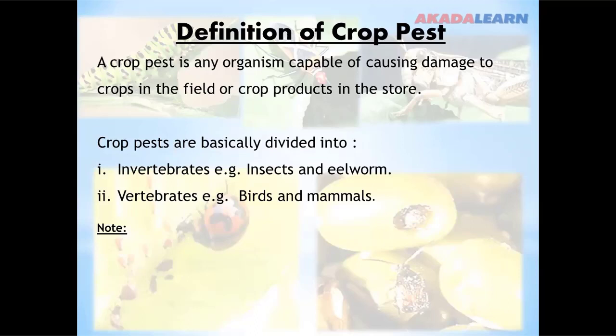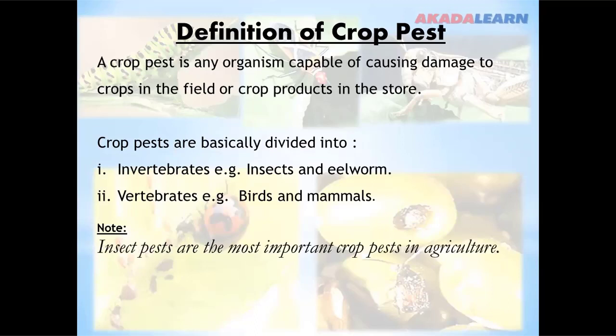Take note of this: insect pests are the most important crop pests in agriculture. This means that insect pests are the major organisms that destroy or attack crops compared to other crop pests.